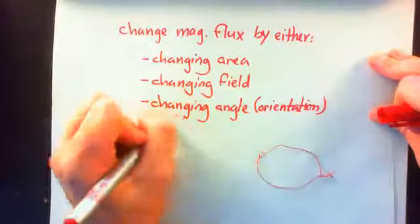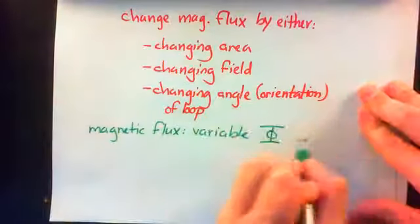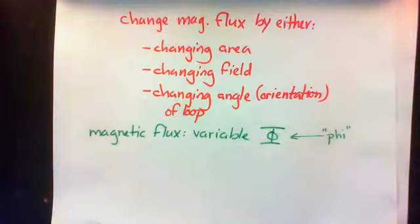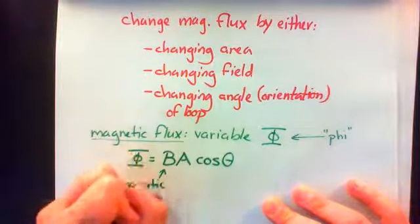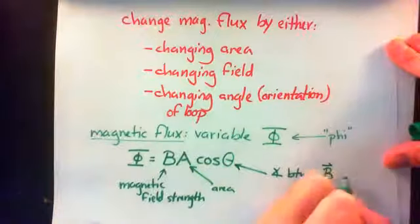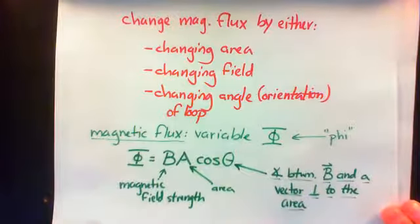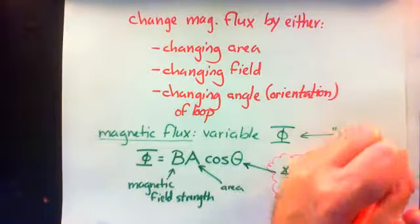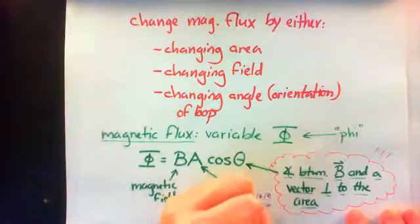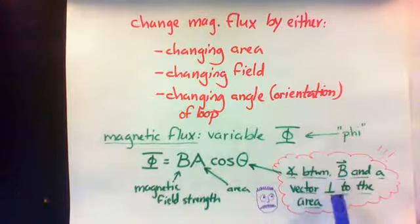That leads us into the basic equation for magnetic flux. Magnetic flux is represented by the variable phi — Greek letter phi. It looks like a circle with a line and two lines up top and bottom. The magnetic flux is equal to B times A times the cosine of theta, where B is the magnetic field strength, A is the area, and theta is the angle between the magnetic field and a vector perpendicular to the area. Memorize that phrase — very often people incorrectly use the angle between the magnetic field and the area itself. That is incorrect. Theta is the angle between the magnetic field and a vector perpendicular to the area.